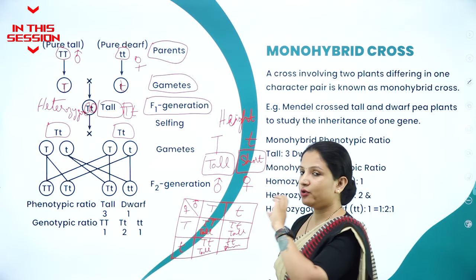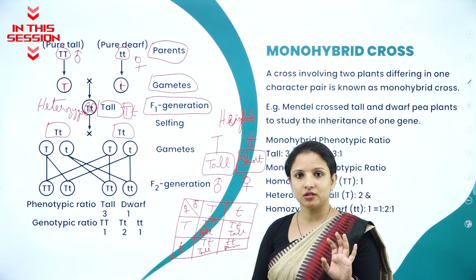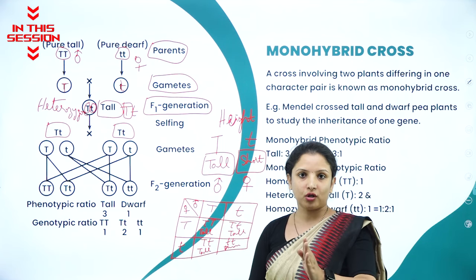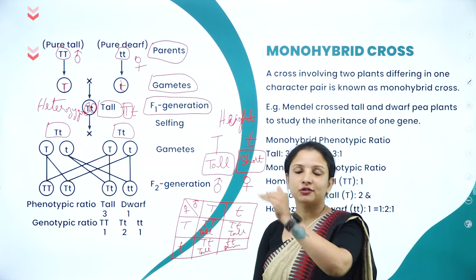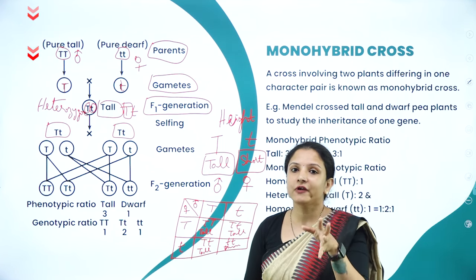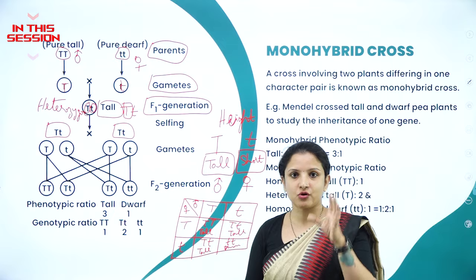This pea plant, when he has sown it in the garden, by looking at it he can say this is a tall plant, this is a short plant. So that is called a phenotypic ratio.